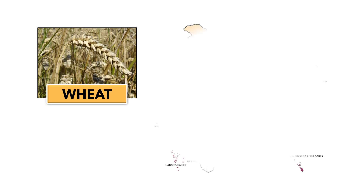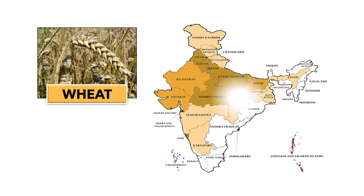Wheat is the staple food of the people of North India. It is mainly grown in Punjab, Haryana, Uttar Pradesh and Madhya Pradesh.